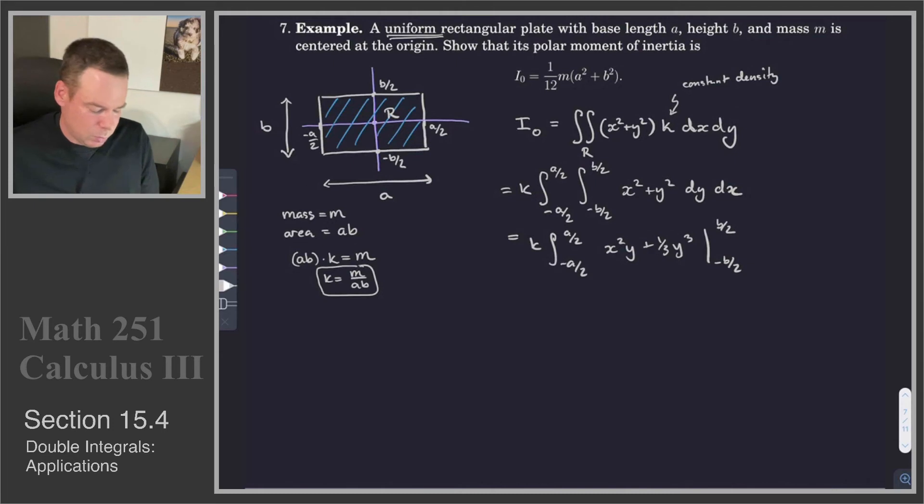We could have exploited a bit of symmetry here as well. That was an even function. We were integrating it over a symmetric interval. So we could exploit that symmetry, but that's fine.